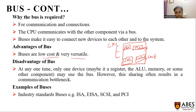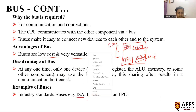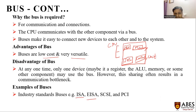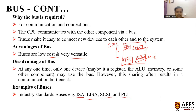Examples of buses are ISA (Industry Standard Architecture), EISA (Extended Industry Standard Architecture), SCSI (Small Computer System Interconnect), and PCI (Peripheral Component Interconnect). These are buses used for different purposes.